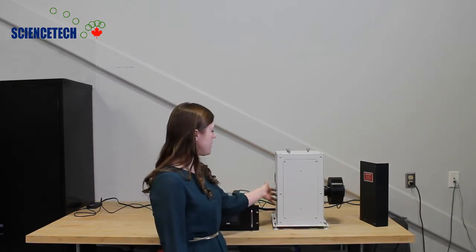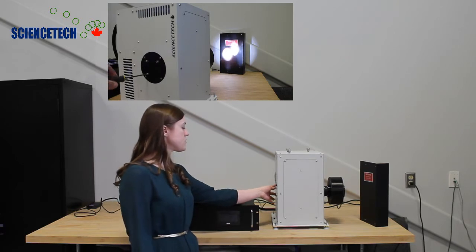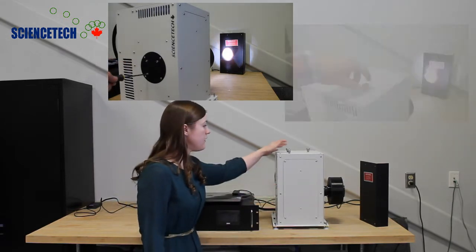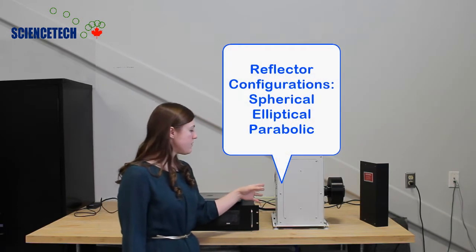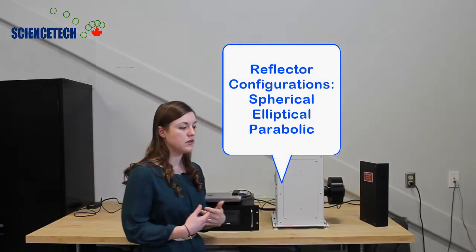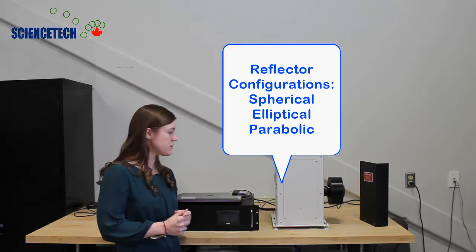On the side here you have these screws for adjusting the reflector and these on top are for adjusting the lamp position. There are a few reflectors available: spherical, elliptical and parabolic reflectors.